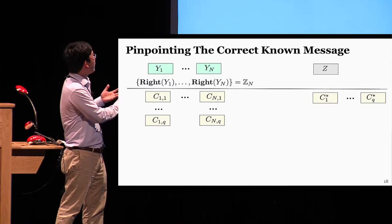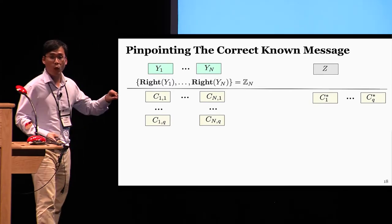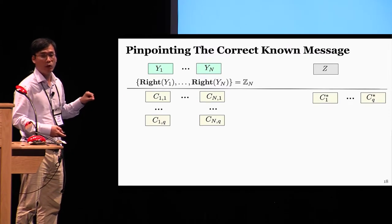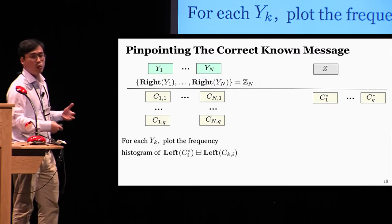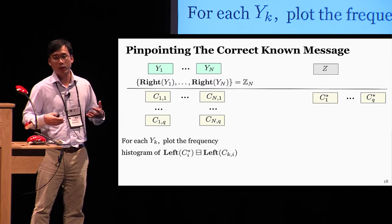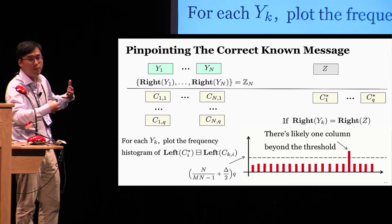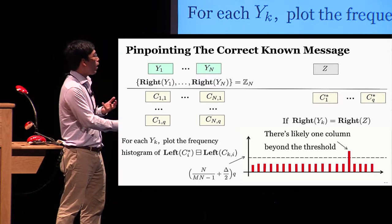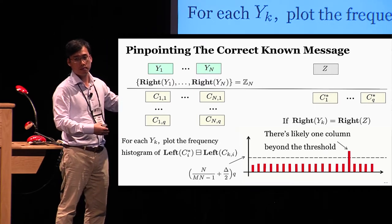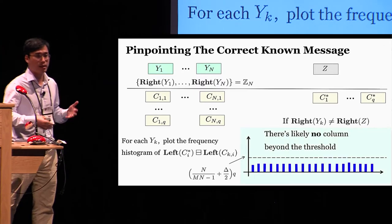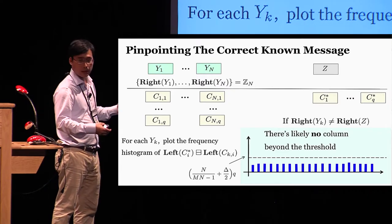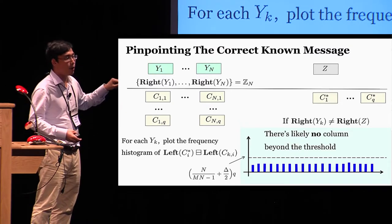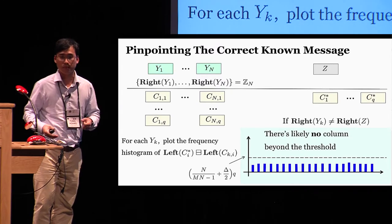Now, remember that we are given N messages Y1 to YN and exactly one of them has the same right half as the target Z. We need to pinpoint that particular known message. In order to do that, for each Yk we plot the frequency histogram as before. If Yk happens to have the same right half as Z, then as before there is only one column beyond the threshold. In contrast, if Yk does not have the same right half as Z, then it is likely that no column would ever surpass the threshold. So by looking at the histograms, you can pinpoint the correct known message with the same right half as the target Z.